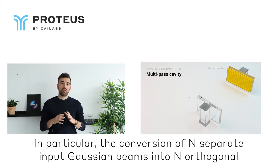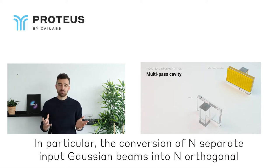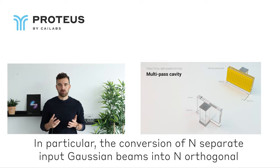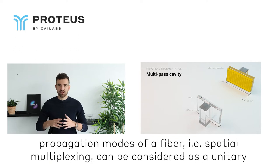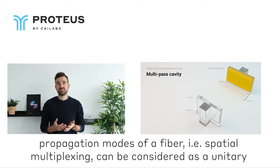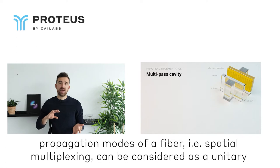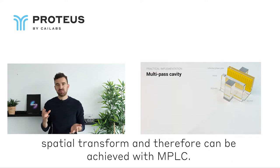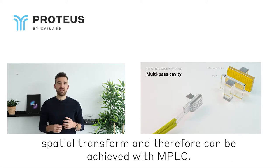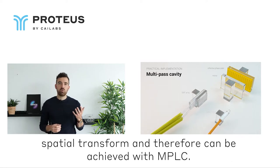In particular, the conversion of N separate input Gaussian beams into N orthogonal propagation modes of a fiber — that is spatial multiplexing — can be considered as a unitary spatial transform and therefore can be achieved with the MPLC.